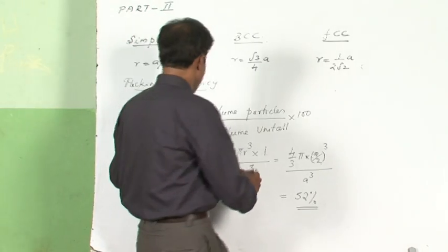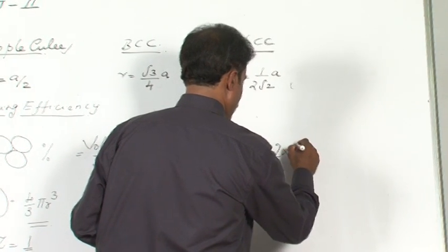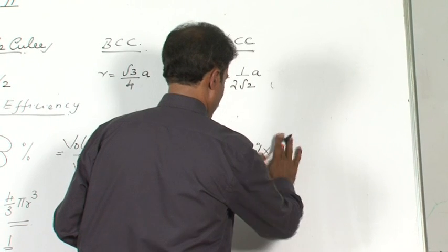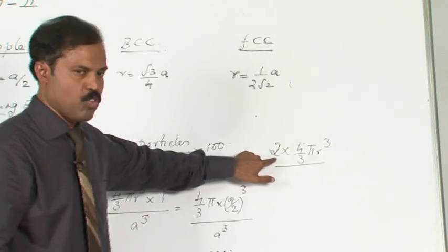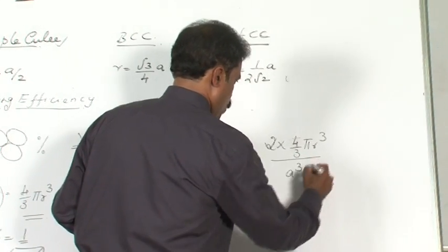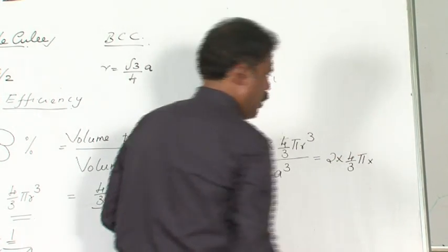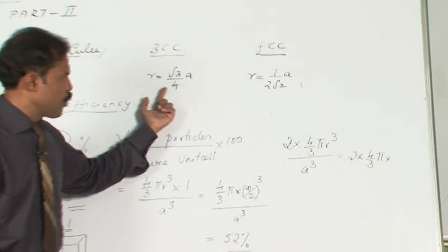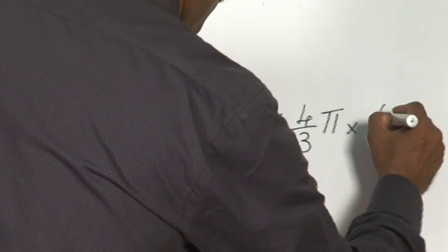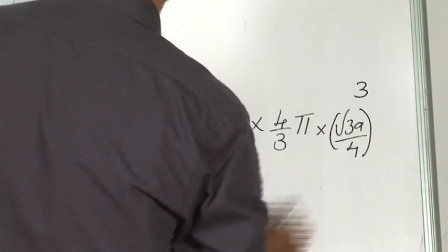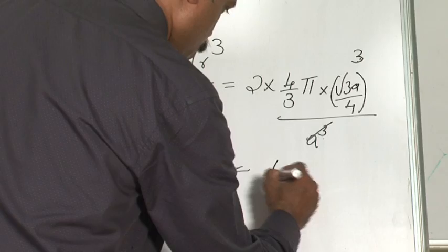Now we come to BCC. In BCC, the volume of the particles is 2 × 4/3 π r³, because the effective number of particles in BCC is 2, divided by a³. For r, we substitute in terms of a: it becomes √3·a/4, so the expression becomes (√3·a/4)³ divided by a³. The a³ terms cancel, and working it out gives 68 percent.